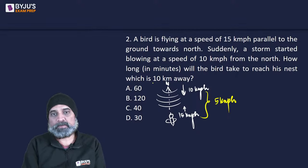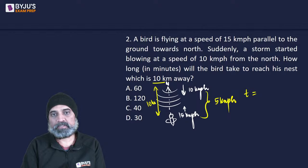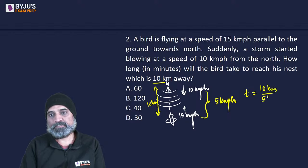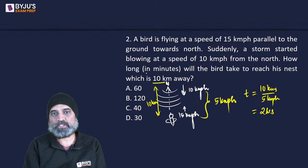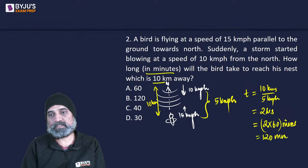Since the bird has to cover 10 km at an effective speed of 5 km/h, time = distance/speed = 10/5 = 2 hours. Converting to minutes: 2 × 60 = 120 minutes. So the answer is option B.